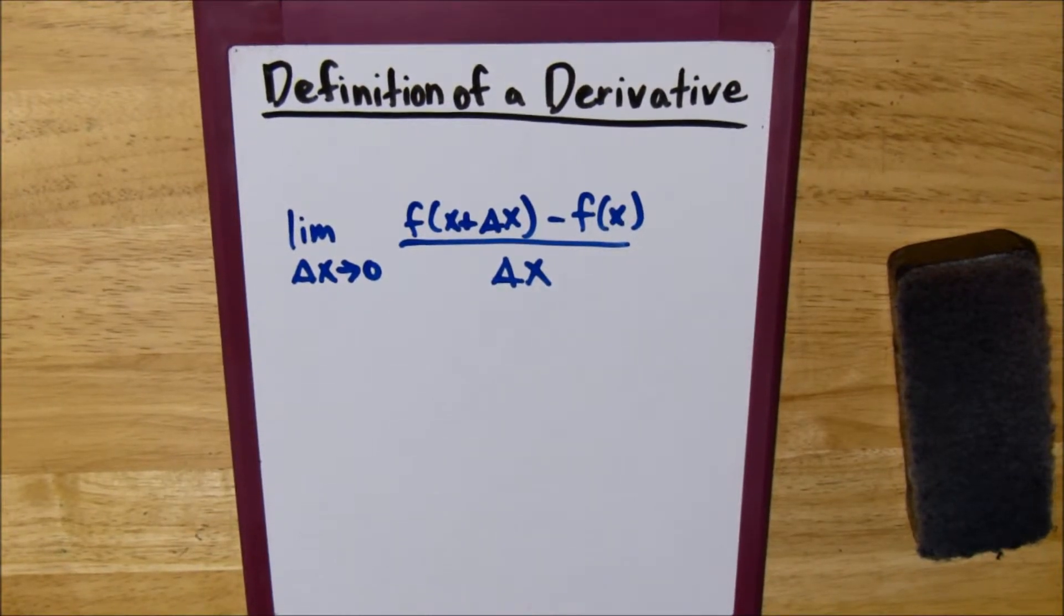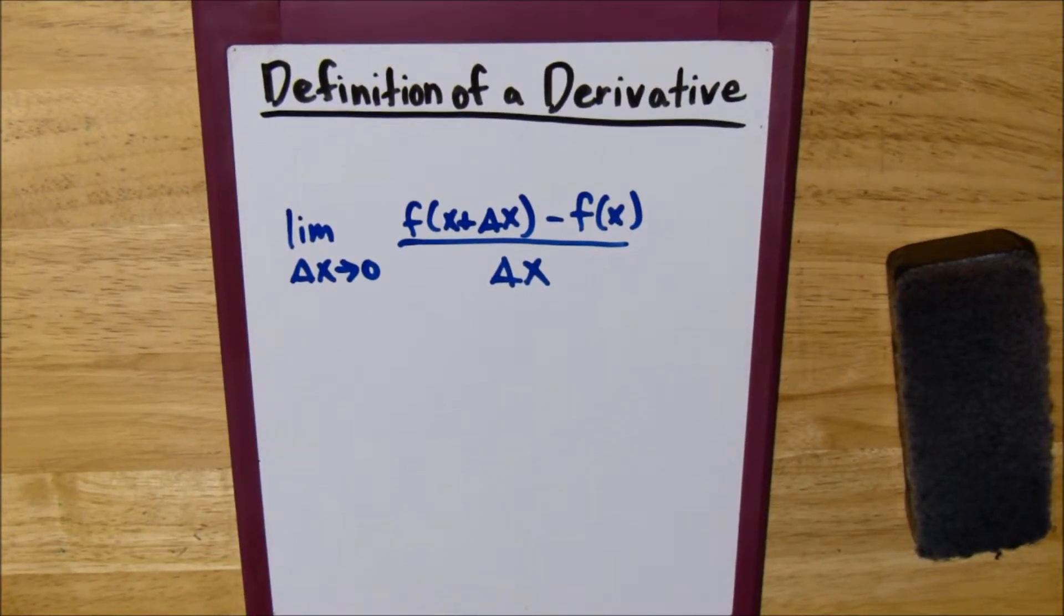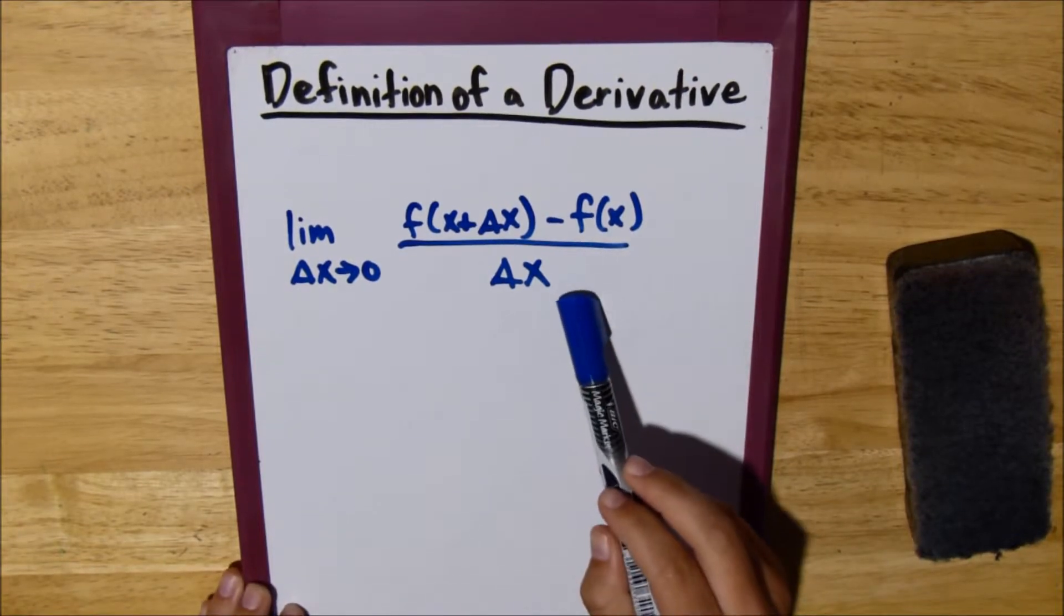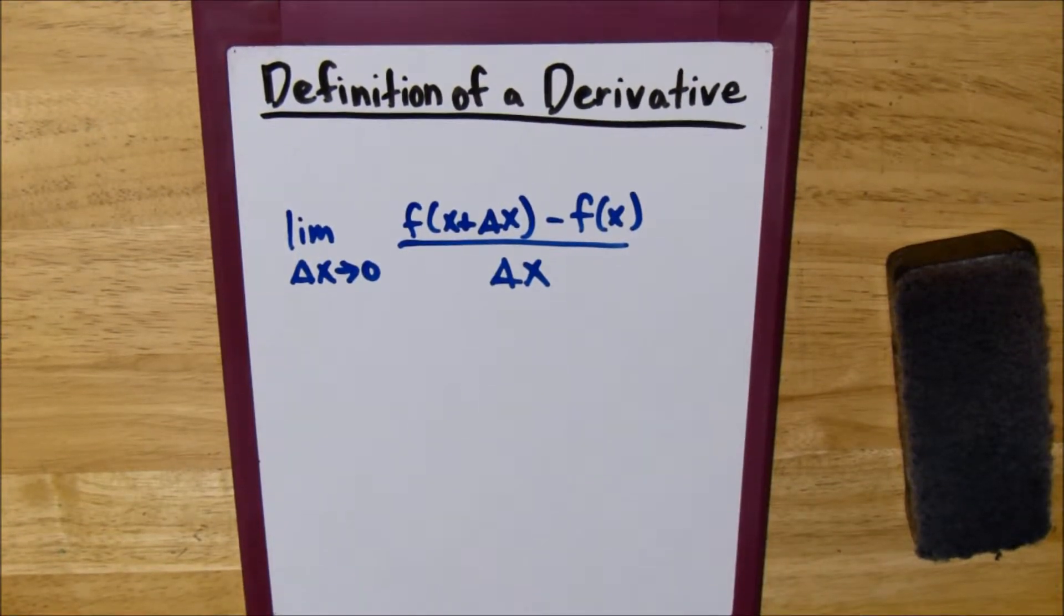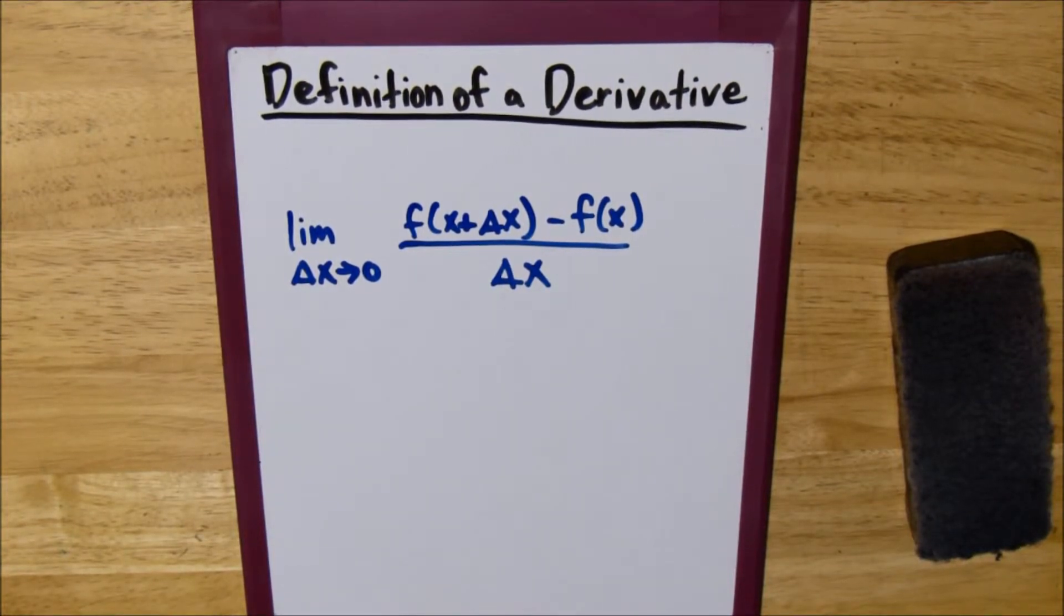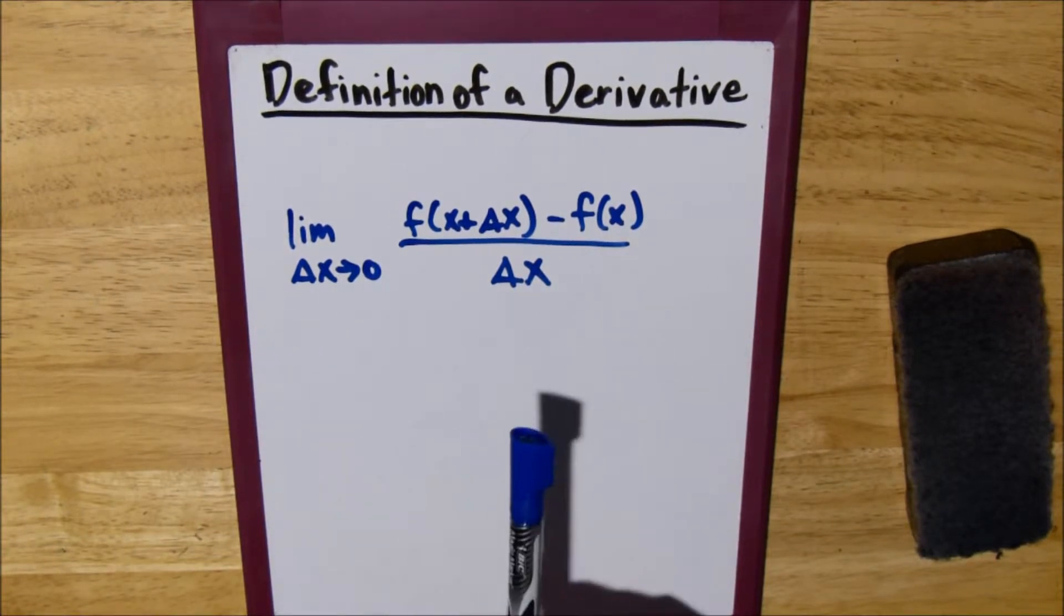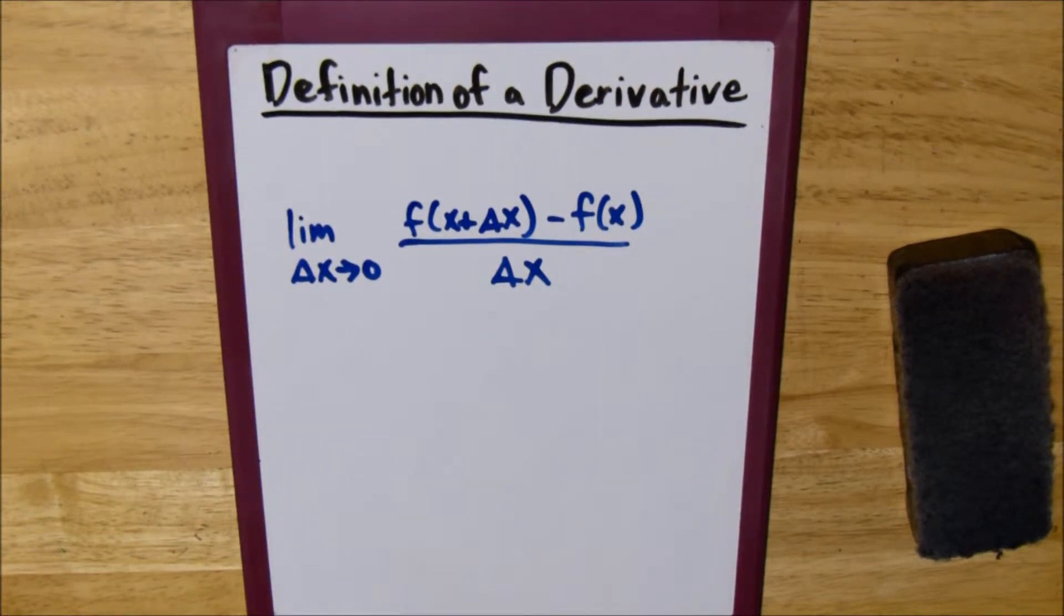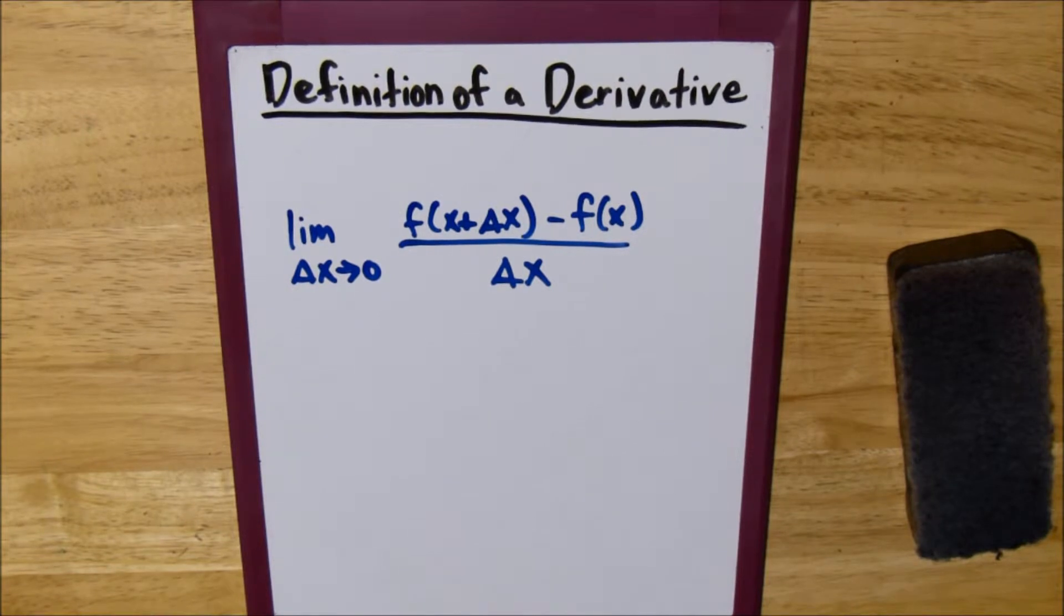So, essentially what you do is you take your function, you plug it in here, you simplify stuff, so like if you get 0 over 0, you know that you can still simplify something. And if you'll notice, if you plug in 0 right now, you'll get the denominator being 0, and you can never divide by 0, so you have to simplify something out.